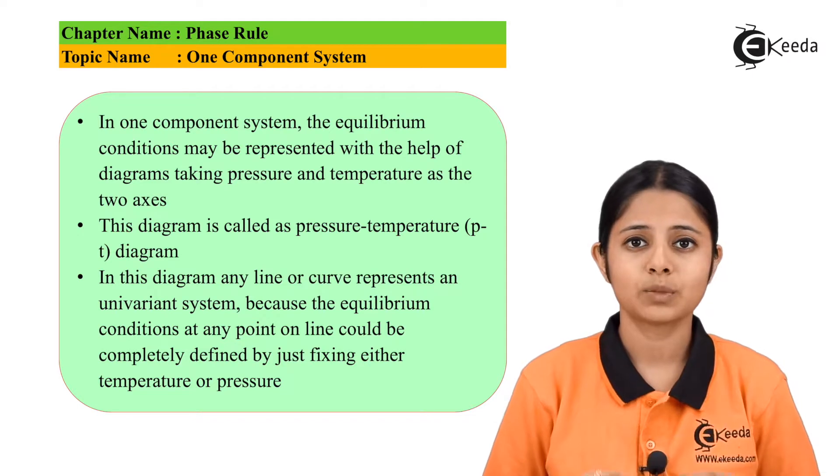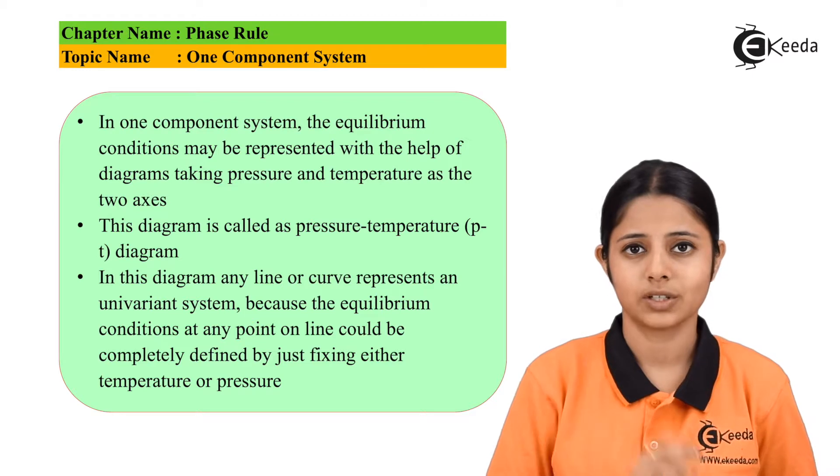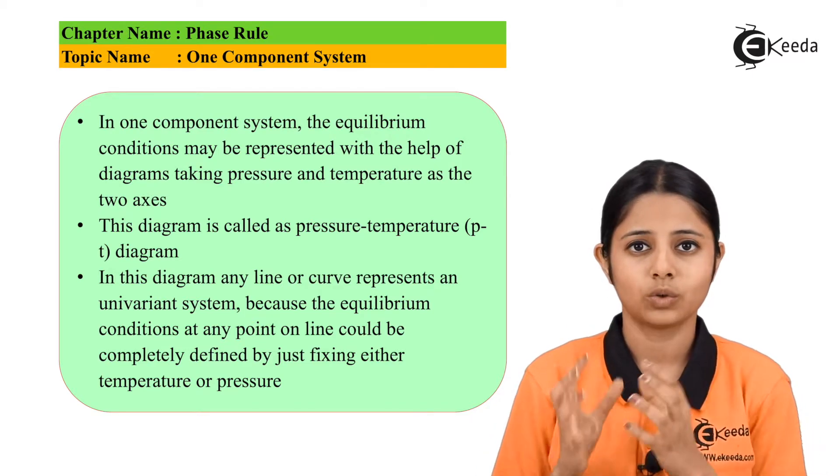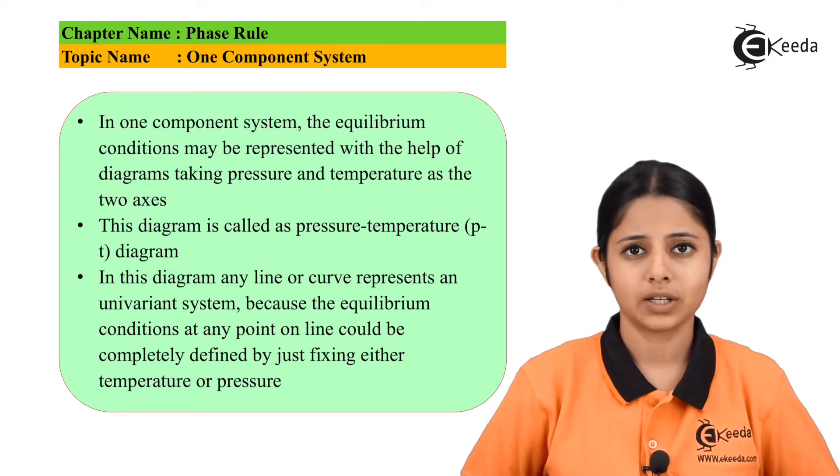This one component system has many phases. It has three phases: the solid state, the liquid state, and the gaseous state. Water undergoes three phases: the solid state known as freezing, the liquid known as melting, and the gaseous state known as vaporization.